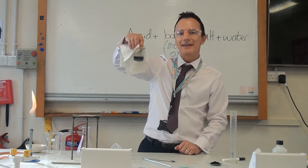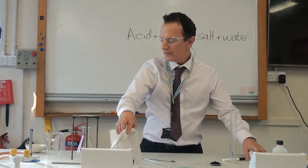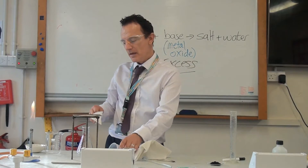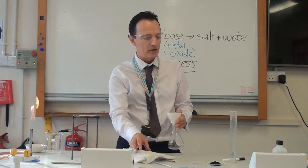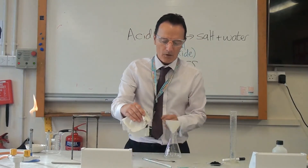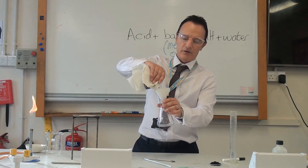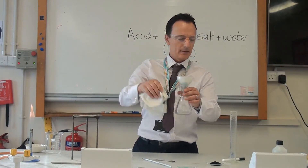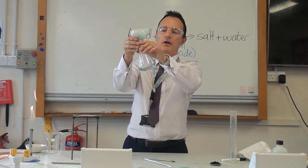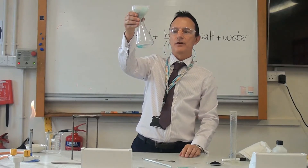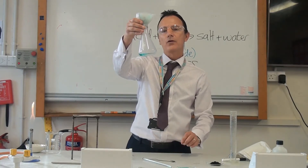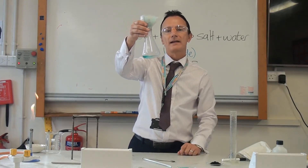Now we need to filter out that excess copper oxide. We do that with a filter funnel and filter paper. In an exam, mention the equipment you are going to use for this step. We pour the solution through the filter paper and we should start to see copper chloride filtering through. We will leave that filtering for a few moments and then come back to see how we get the pure dry salt from that copper chloride solution.